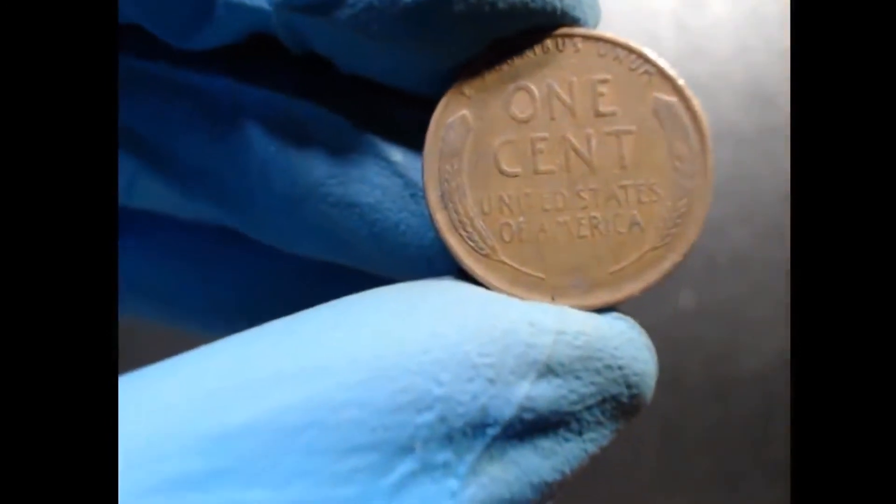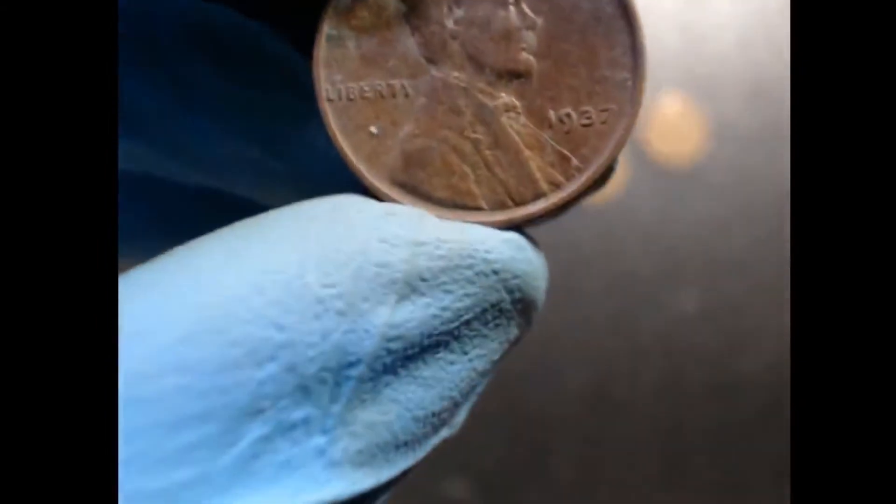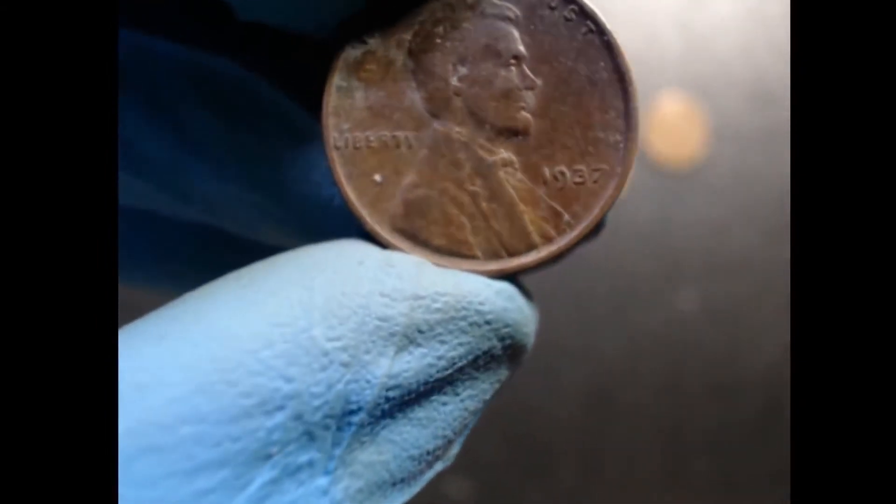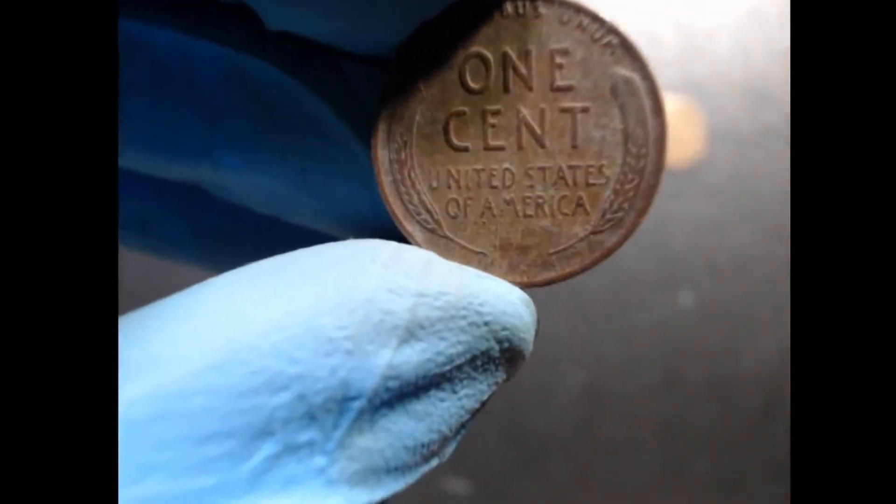Now, the other ones that I got was this 1935, which is not as worn and the date is pretty visible. And this one, this 1937, that looks like it's been in a basement or something somewhere for a while. It's got some interesting toning.